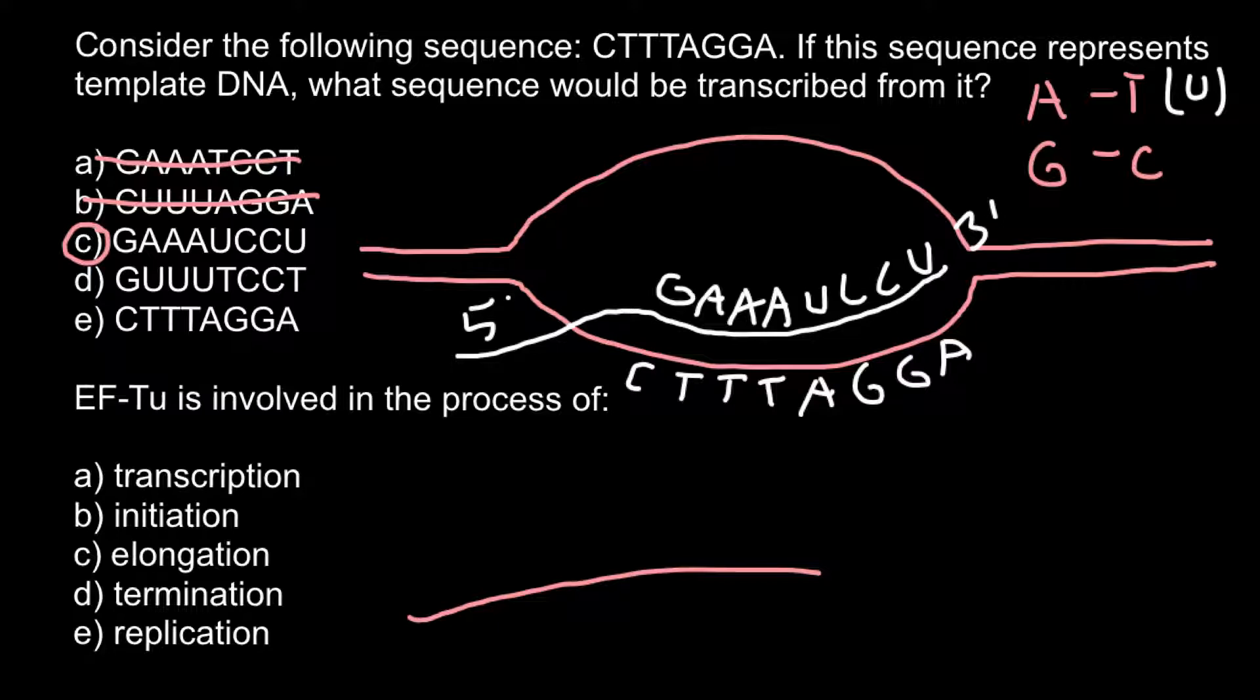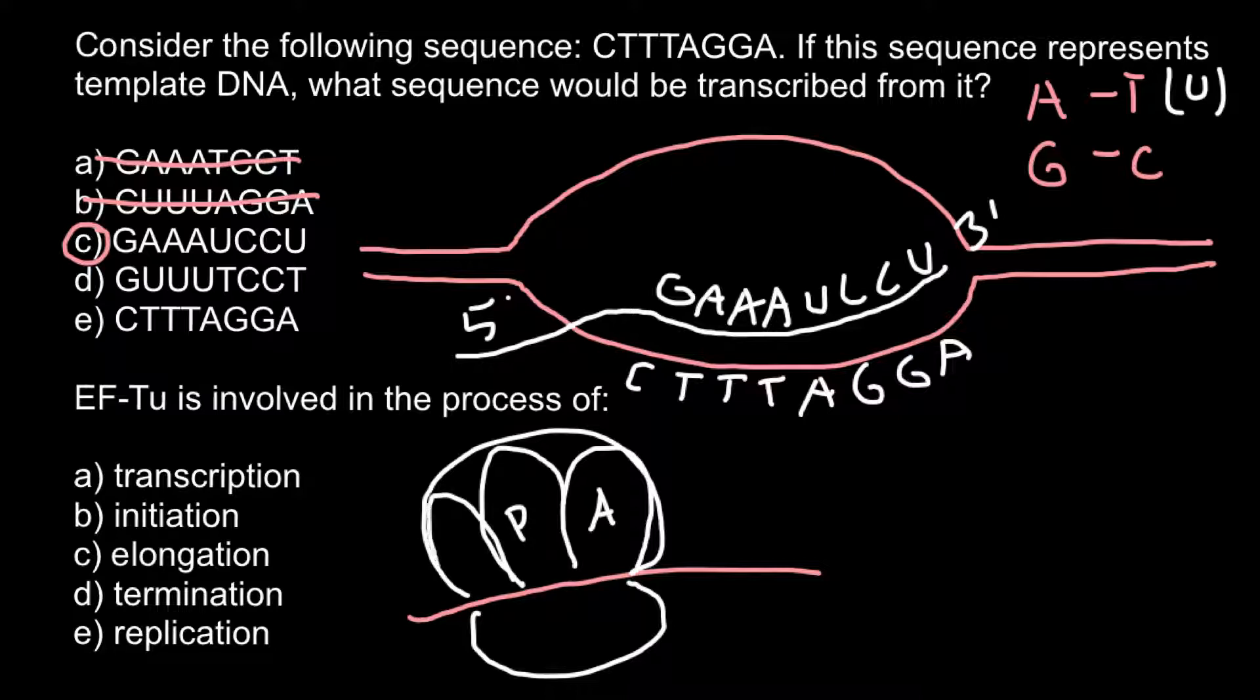Imagine that this is messenger RNA. Here we have the ribosome: large subunit and small subunit. Here we have three sites: site A, site P, and site E. The ribosome would move in this direction. First, tRNA would go in site A, then P, and would exit through site E.